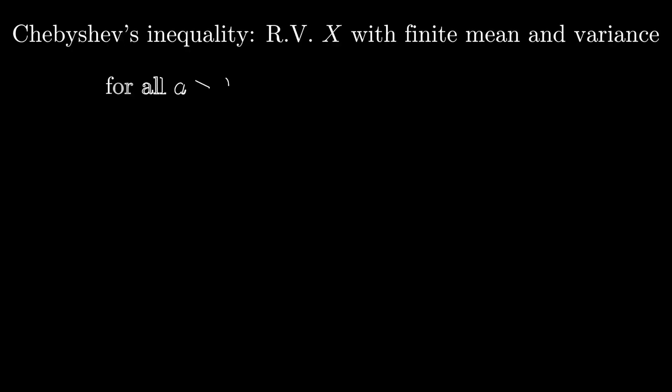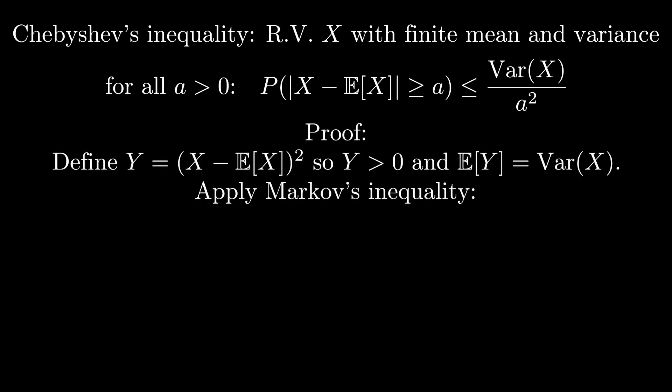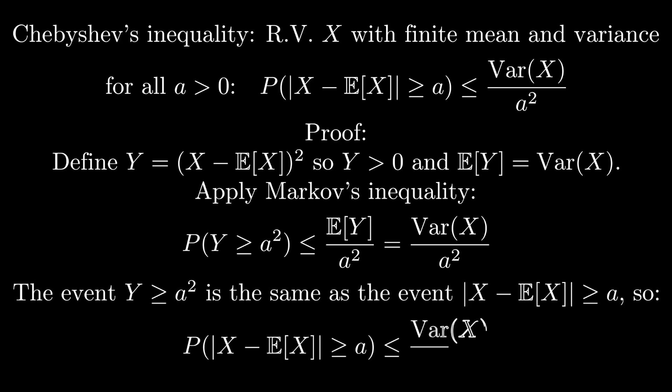In Markov's inequality, we take advantage of knowing the mean. Chebyshev's inequality gives tighter bounds if you also know the variance. Chebyshev's inequality says that the probability that a random variable deviates from its mean by more than a is less than the variance of that random variable divided by a squared. Proving Chebyshev's inequality is a more or less direct application of Markov's inequality. You start out by defining a new random variable that is the squared difference between x and its expectation. This new random variable is non-negative, so Markov's inequality applies, and its expectation is the variance of x. So we plug in Markov's inequality for this new quantity y using a squared instead of a. The event that y is greater than or equal to a squared is the same as the event that x deviates from its mean by more than a. So we rewrite everything just in terms of x, and we've proved Chebyshev's inequality.